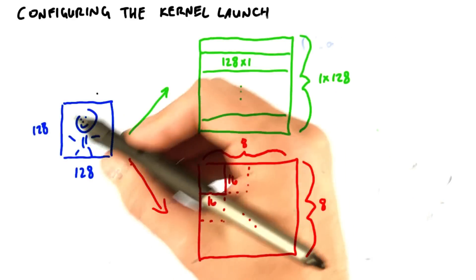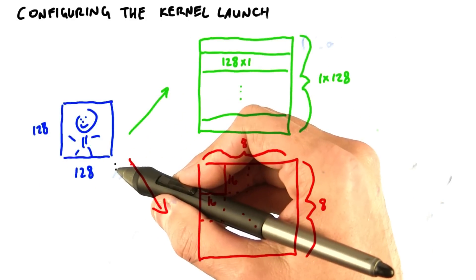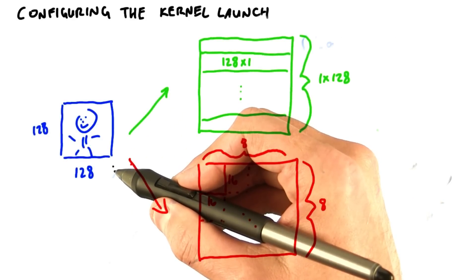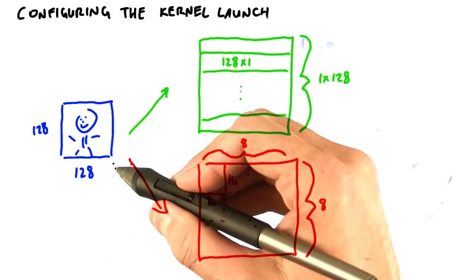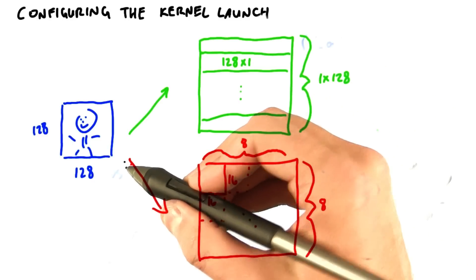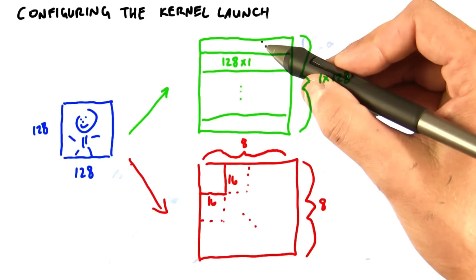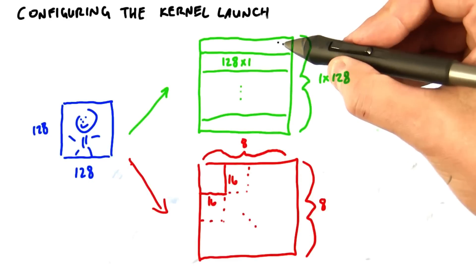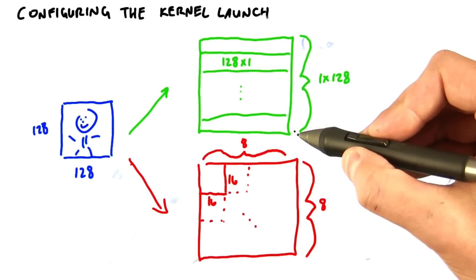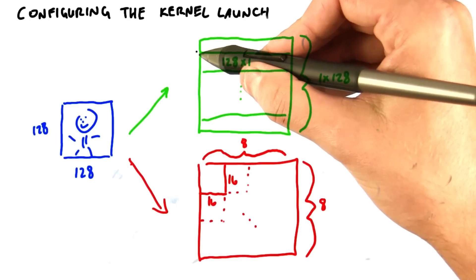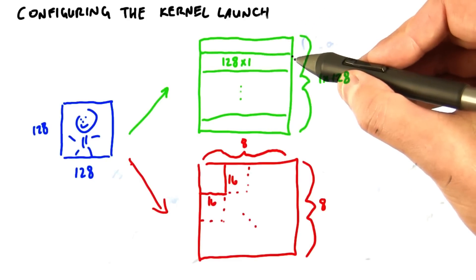For instance, perhaps we'd like to process this 128 by 128 pixel image. We'd like to launch one thread per pixel. We might choose, for instance, to launch these 128 by 128 threads as 128 blocks in the y-dimension, where each one of those blocks is a 128 by 1 block of threads in the x-dimension.